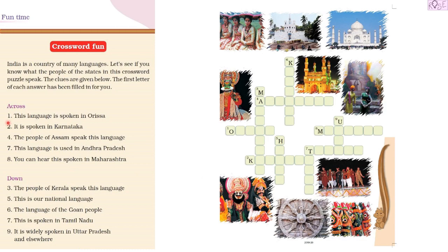We have to see the number and the phrase, then figure out which language to fill in. For example, across number one — we fill a language spoken in Orissa. Across number two would be a language spoken in Karnataka. It starts with K. Similarly, we read each clue and fill the language accordingly.